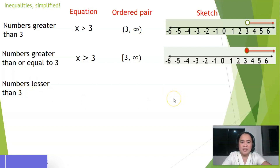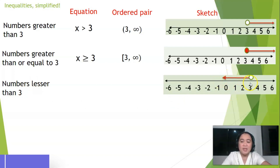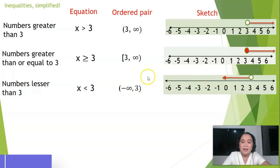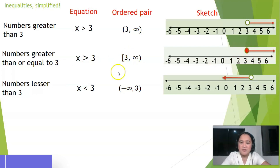Numbers that are lesser than three: all numbers to the left of three, where three is not part of the solution. The equation is x is lesser than three, and the interval equivalent is negative infinity comma three. To identify the interval, always start at the leftmost value going to the rightmost. Here the arrow extends infinitely to the left — negative infinity — and ends at three, which is open, so parenthesis.